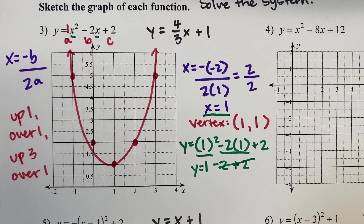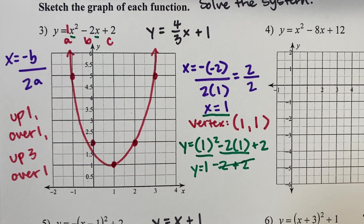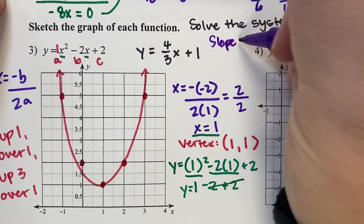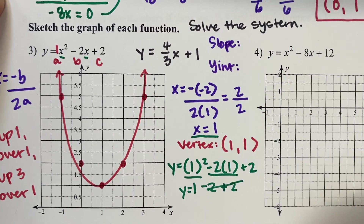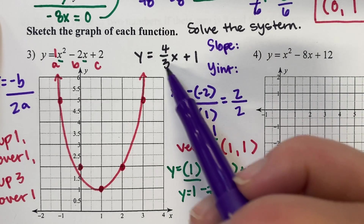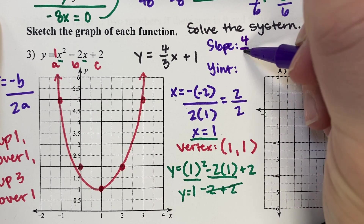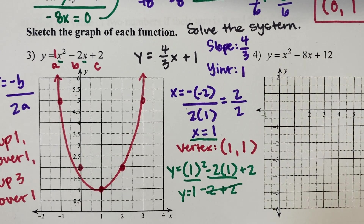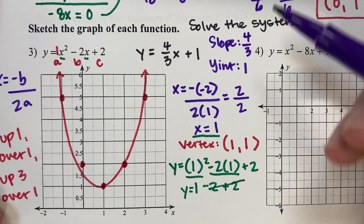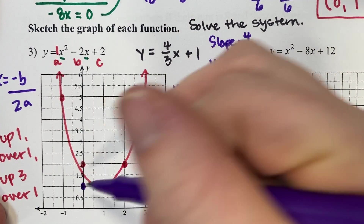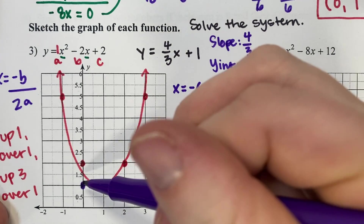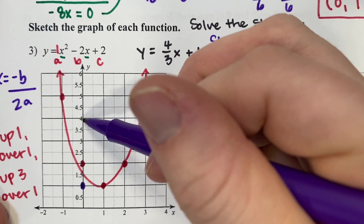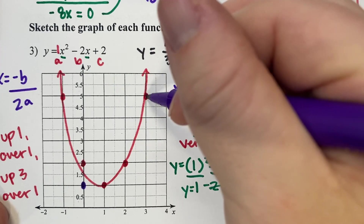Now we have a linear equation, and it's really nice because it's written in slope-intercept form. We can easily identify the slope, which is always in front of x — that's 4 over 3 — and the y-intercept, which is positive 1. When graphing linears, start with the y-intercept at positive 1 on the y-axis, then use the slope to count to the next point: up 4 and over 3. Rise over run.